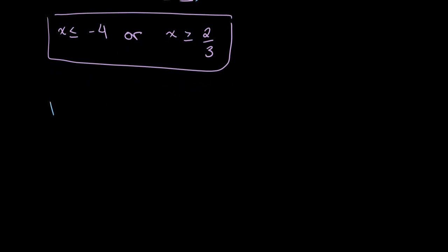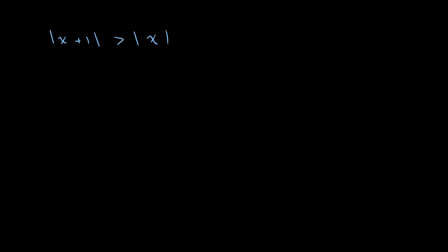Let's say we have the absolute value of x plus 1 is greater than the absolute value of x. Remembering what we did above, we simply square both sides of the equation to get rid of the absolute value signs, giving us: x plus 1, whole squared, is greater than x whole squared. We can then solve this algebraically to find our final answer.